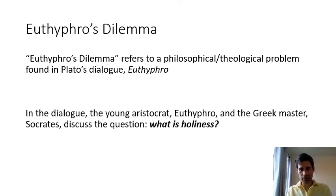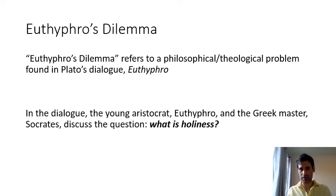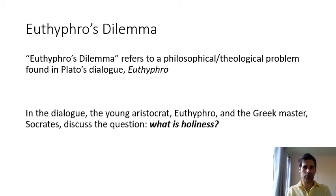So what is Euthyphro's Dilemma? Euthyphro's Dilemma is one of the most ancient commentaries upon this question of what is the relationship between God and morality. It refers to a philosophical-theological problem found in Plato's dialogue called Euthyphro. In the dialogue, the young aristocrat Euthyphro and the Greek master Socrates discuss the question: what is holiness?